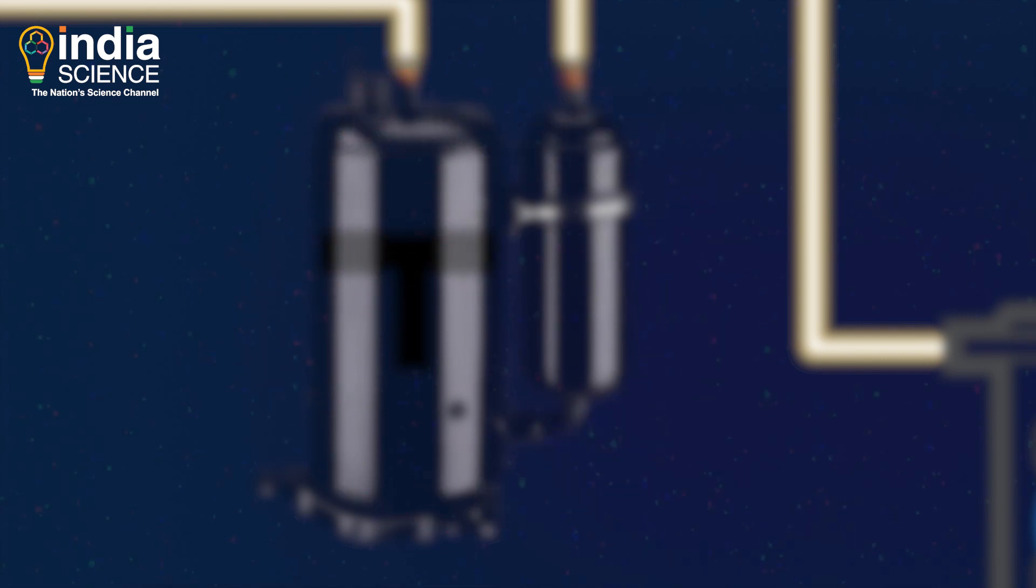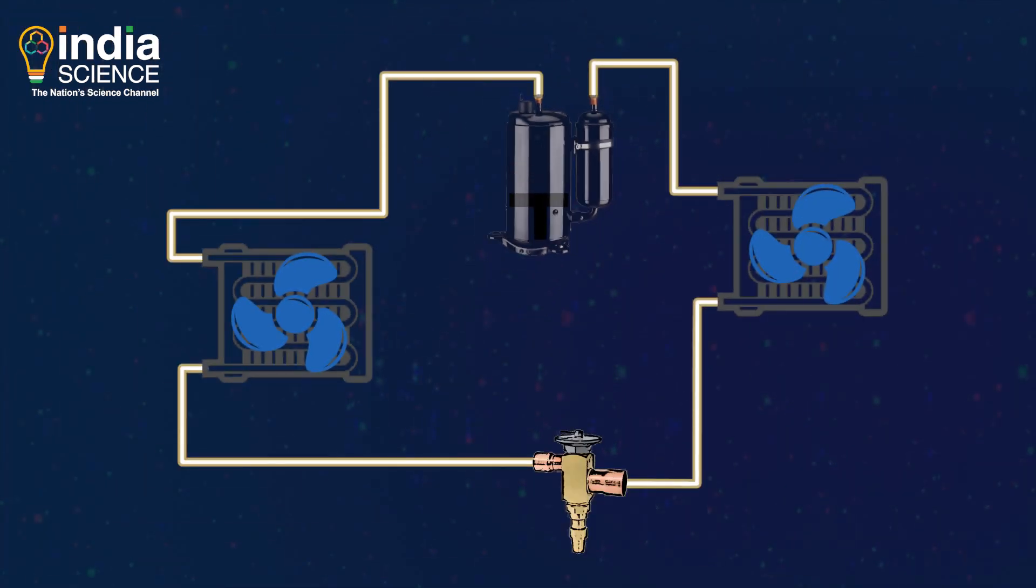Since heat naturally flows from higher to lower temperatures, we want the temperature of the refrigerant to be higher than the outer temperature. That is why we need a compressor to compress the refrigerant.